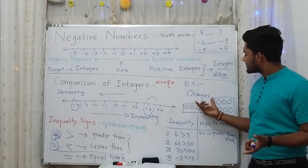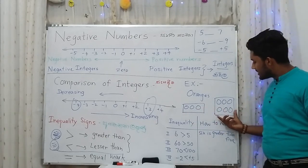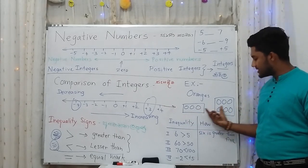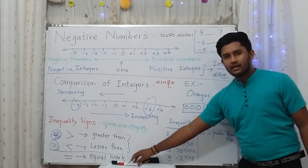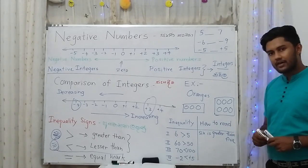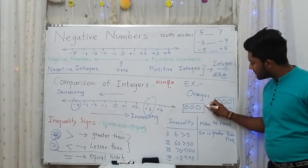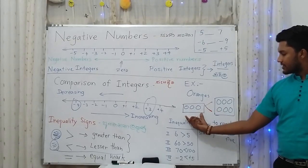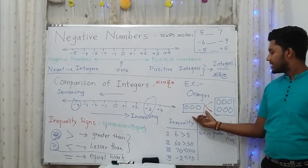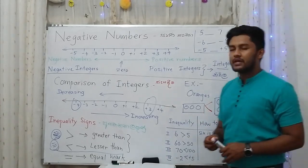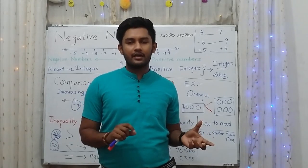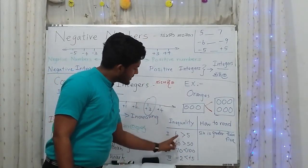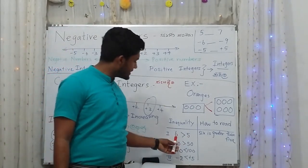Here is an example using oranges. On one side there are three oranges, on the other side there are six oranges. The side with six oranges has the bigger amount. We use the less than mark because the mouth of the sign is closed toward the front. Each number has to be compared using inequality signs.